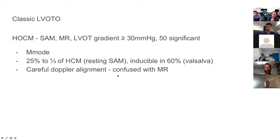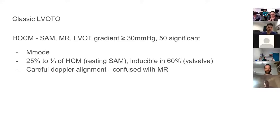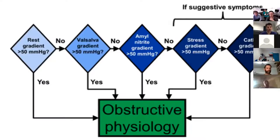Doppler alignment is really important when screening for this. When you throw a continuous wave through the LVOT — because you do get associated MR with SAM and higher LVOT gradients — it's important not to confuse your MR gradient with the LVOT gradient.